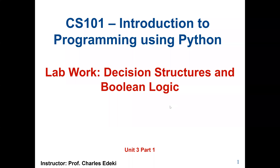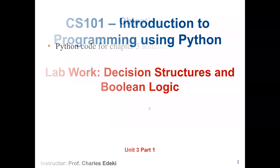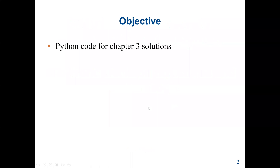Welcome to CS101, Introduction to Programming using Python. This lab will cover Chapter 3 of our course textbook, which is Decision Structures and Boolean Logic. Our main objective is to solve two problems using the Python decision control structures.